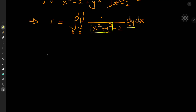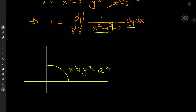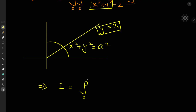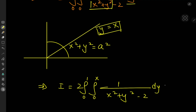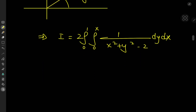There are a couple of things to notice about our new double integral. First, we're integrating with respect to y first, and second, the integrand is a function of x squared plus y squared. If we draw the quarter circle x squared plus y squared equals a squared in the first quadrant, it is symmetric about the line y equals x. So instead of integrating from 0 to 1 with respect to y, we can integrate from 0 to x and double the result. This gives us I equals the integral from 0 to 1, integral 0 to x, times 2, of 1 over x squared plus y squared minus 2, dy dx.